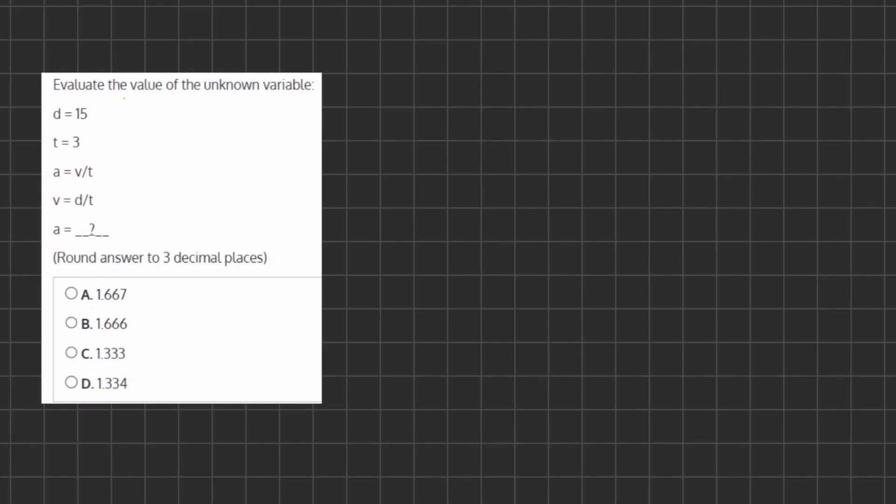In this problem we want to evaluate the value of our unknown variable, and in this case it's going to be a. We are given two different expressions: a equals v divided by t, and v equals d divided by t. To solve for the value of a, we need the values of v and t.